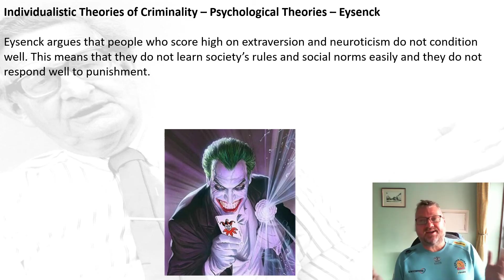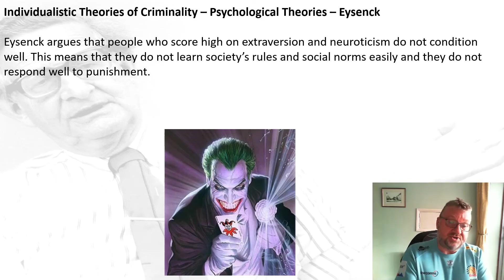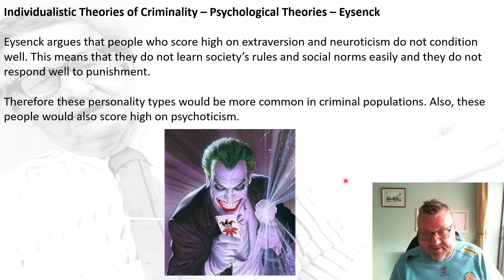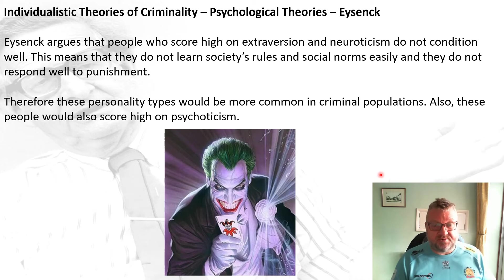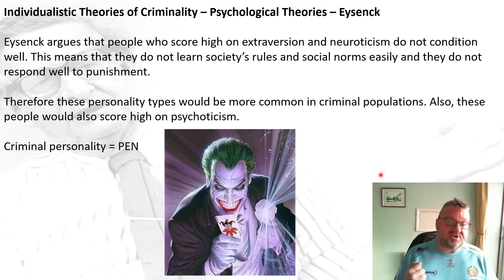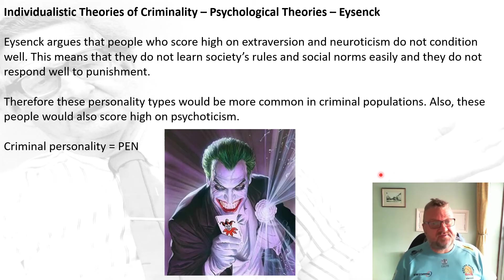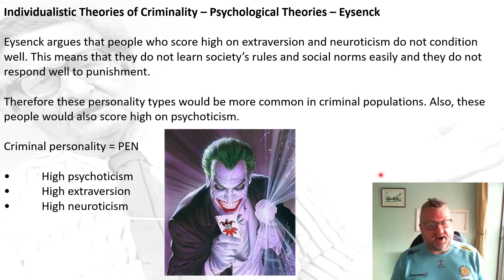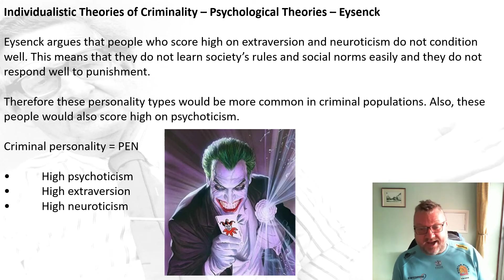So how does this link to criminality? Eysenck argues that people who score high on extroversion and neuroticism do not condition well — they don't learn society's rules and social norms easily and don't respond well to punishment. Therefore these personality types would be more common in criminal populations, and Eysenck also believes these criminals would score high on psychoticism. He believed the criminal personality was high on P, E, and N — high psychoticism, high extroversion, and high neuroticism. I've put a picture of the Joker here, who is definitely that criminal personality type.